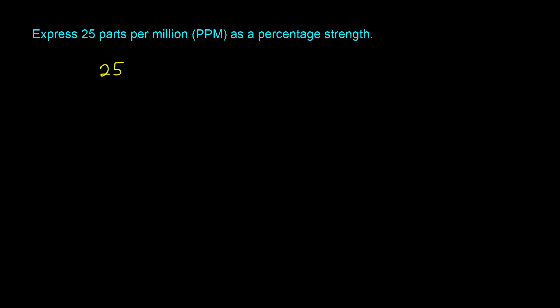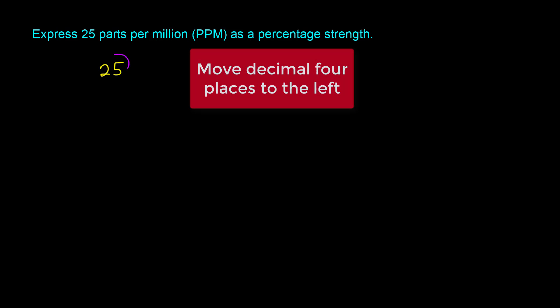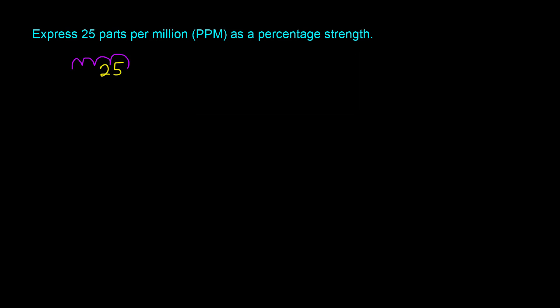Let's apply this trick to one more question: express 25 parts per million as a percentage strength. We take 25 and move the decimal four places to the left: 1, 2, 3, 4. That gives us 0.0025%.